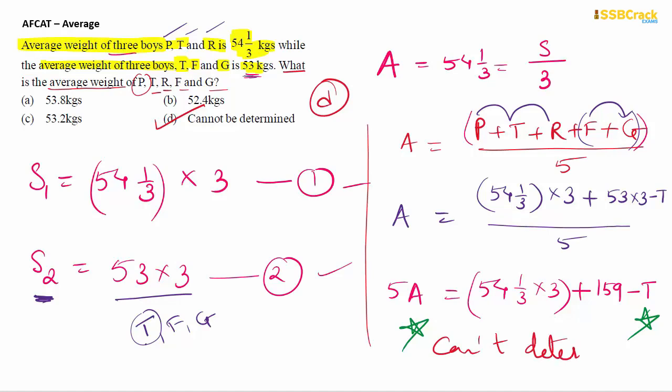So today's questions on Average are complete. As you understood, there is one key formula for averages: Sum of observations divided by Number of observations. You can use S = A × N for sum calculation, then just formulate equations and solve them. You can easily attempt average questions in your AFCAT 2020 exam.